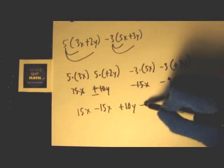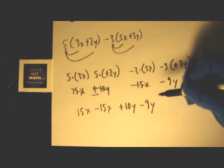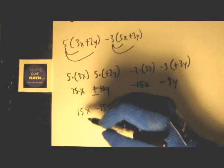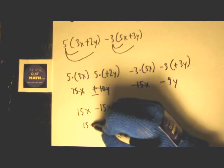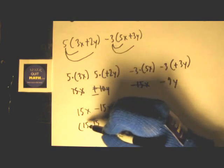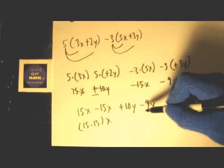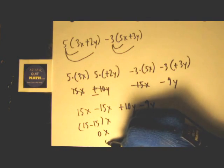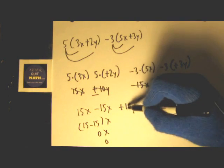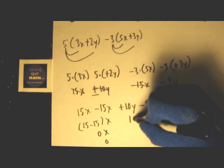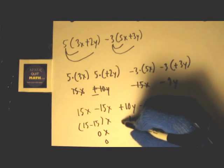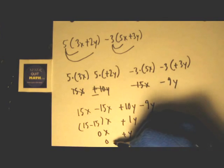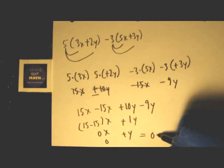So 15X minus 15X equals 0X, which is the same thing as 0. On this side, 10Y minus 9Y is 1Y, which is the same as +1Y, or just +Y. So if your answer is 0 + Y, that's really just equal to Y. That's your answer.